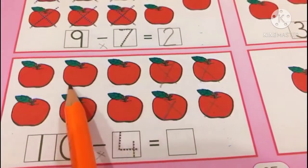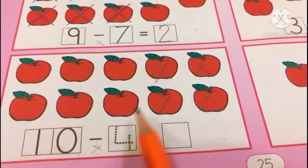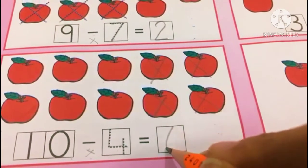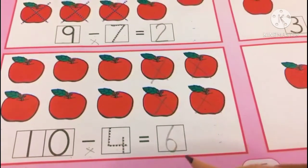Let's count how many left? 3, 4, 5, 6. 6 are left. When we cross 4 apples out of 10, 6 are left.